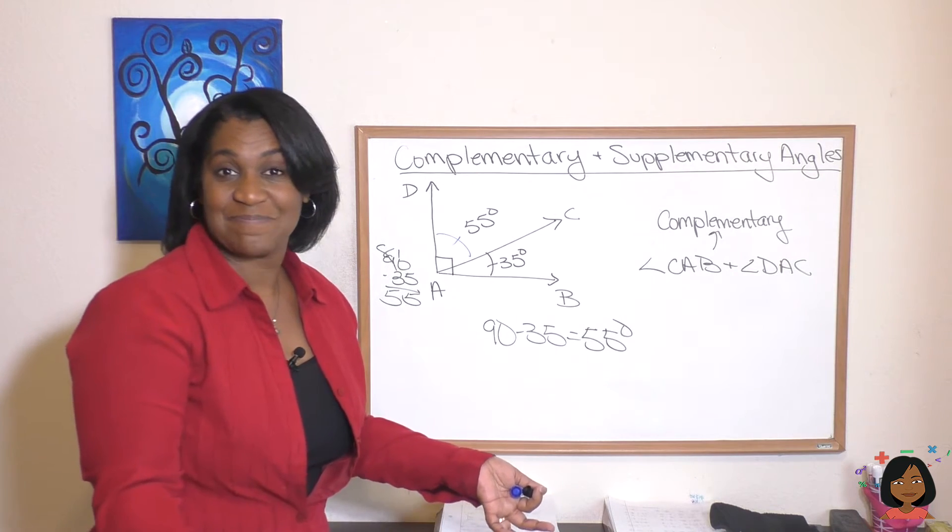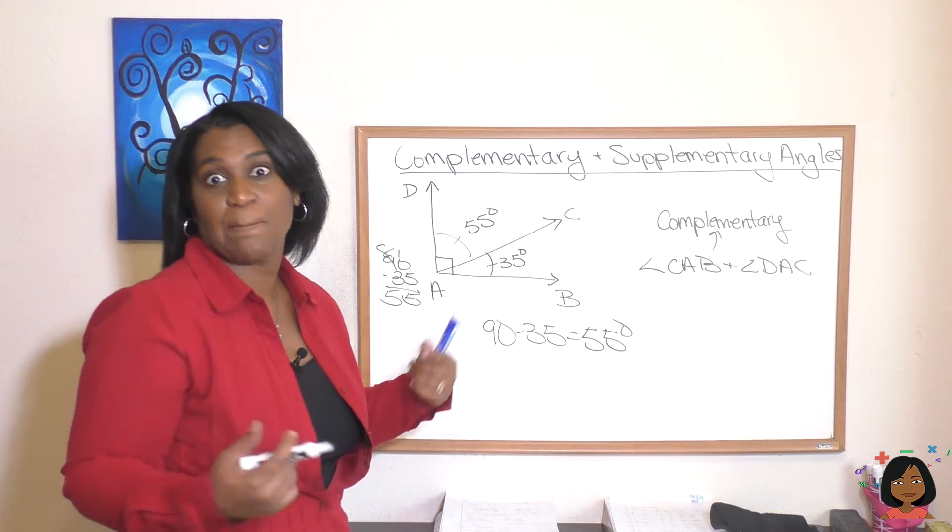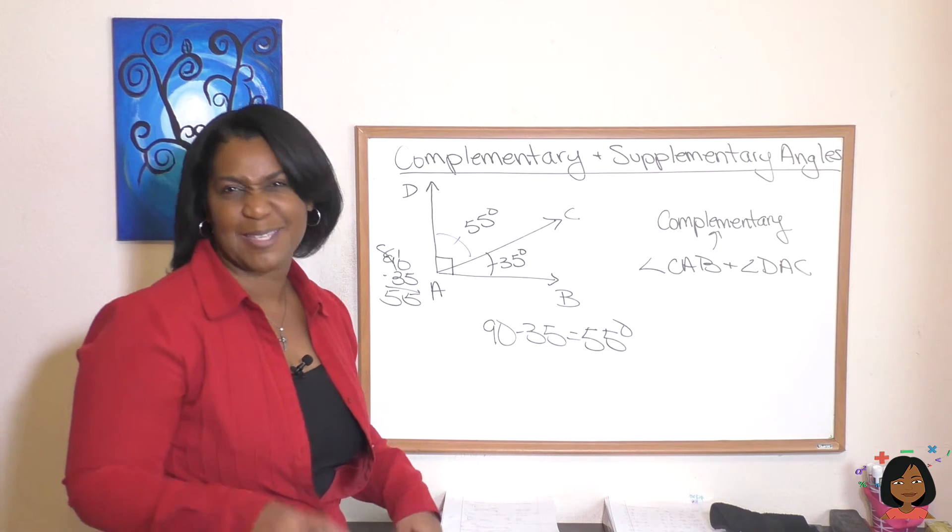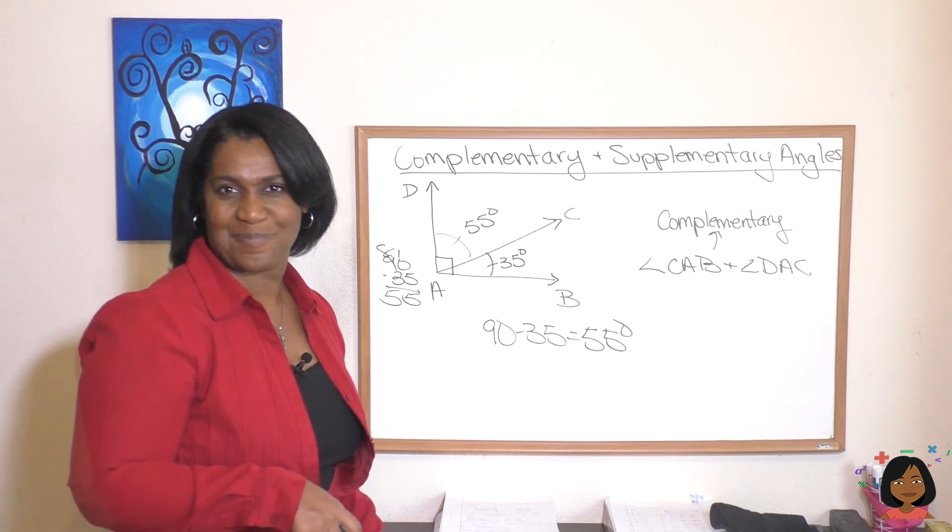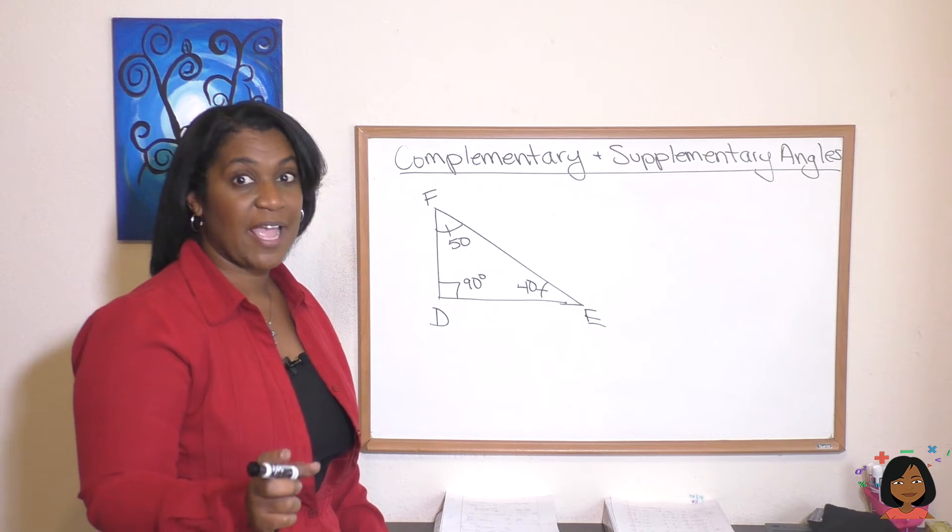People also say that CAB and DAC complement each other. CAB is the complement of DAC. You might hear people say that too. Take a look at this example. Can you find the complementary angles here?